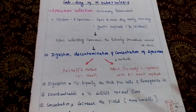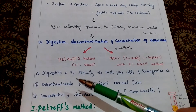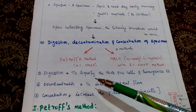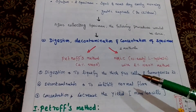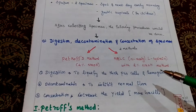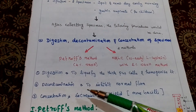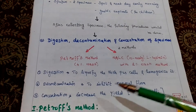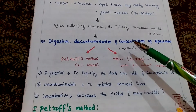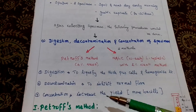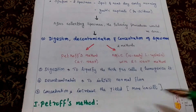Why do we do this? Digestion means to liquefy the thick pus cells and homogenize it. The second step, decontamination, will inhibit the normal flora. The third step, concentration, increases the yield — more bacilli.